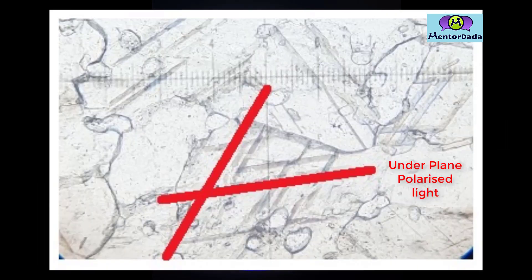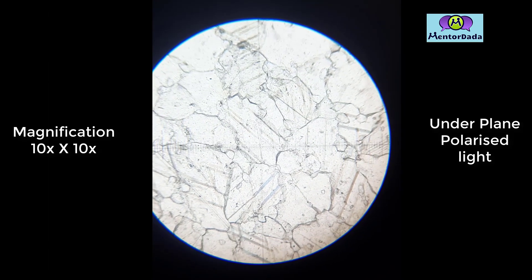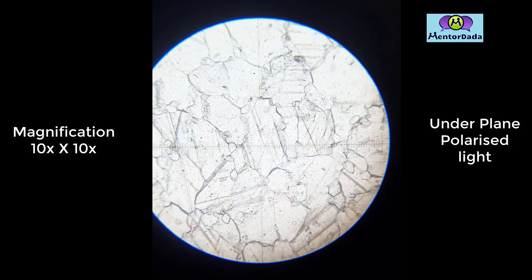As the mineral is cut along the basal section, the two sets of cleavage are not perpendicular to each other. There is no fracture seen in this thin section.